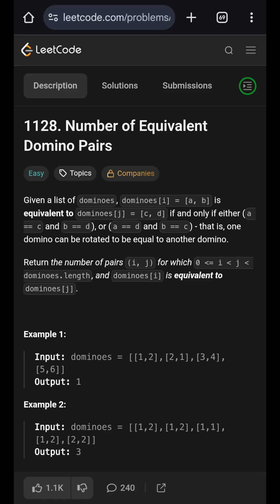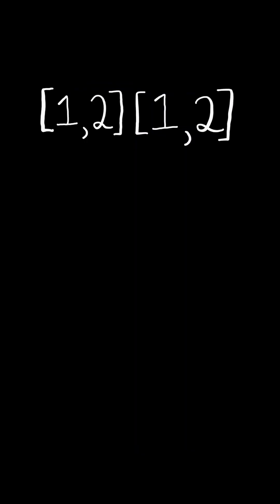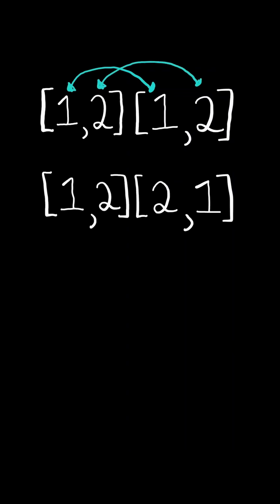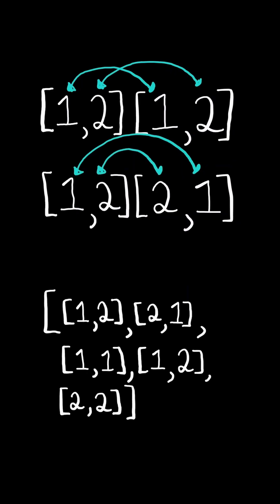Number of equivalent domino pairs. Two dominoes are equivalent if the first element matches the first element and the second element matches the second element. Another case where the dominoes are equivalent is when the first element matches the second element and the second element matches the first element. We are given a list of dominoes and we want to return the number of equivalent pairs.